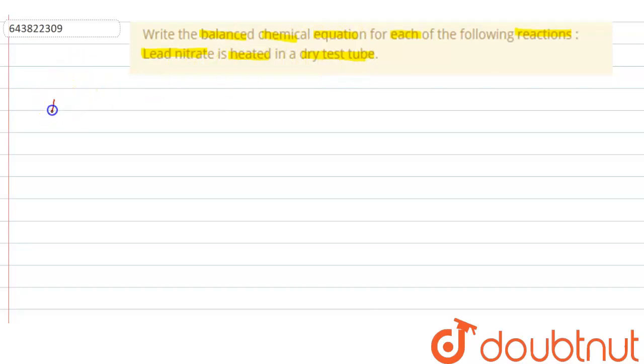So lead nitrate is Pb(NO3)2. When it is heated in a dry test tube, then due to heating, thermal decomposition will take place. And after decomposition,